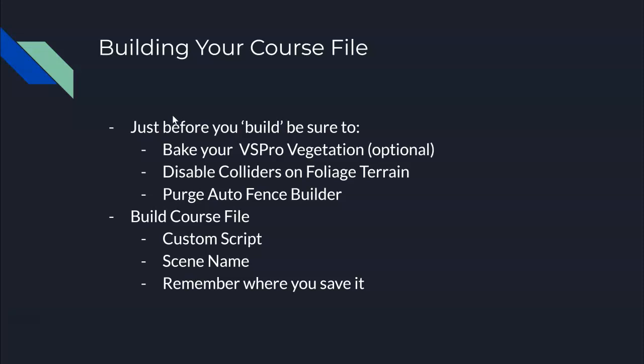One, which is kind of controversial, is baking your VS Pro vegetation. What it means is if you used VS Pro and you used rules-based planting — in other words, you drew a biome, listed the plants, trees, rocks, and objects that go in that biome — then VS Pro uses the density settings and the slope and elevation settings to plant. That's called rules-based planting because you created a bunch of rules and VS Pro decided based on those rules where to put those things.